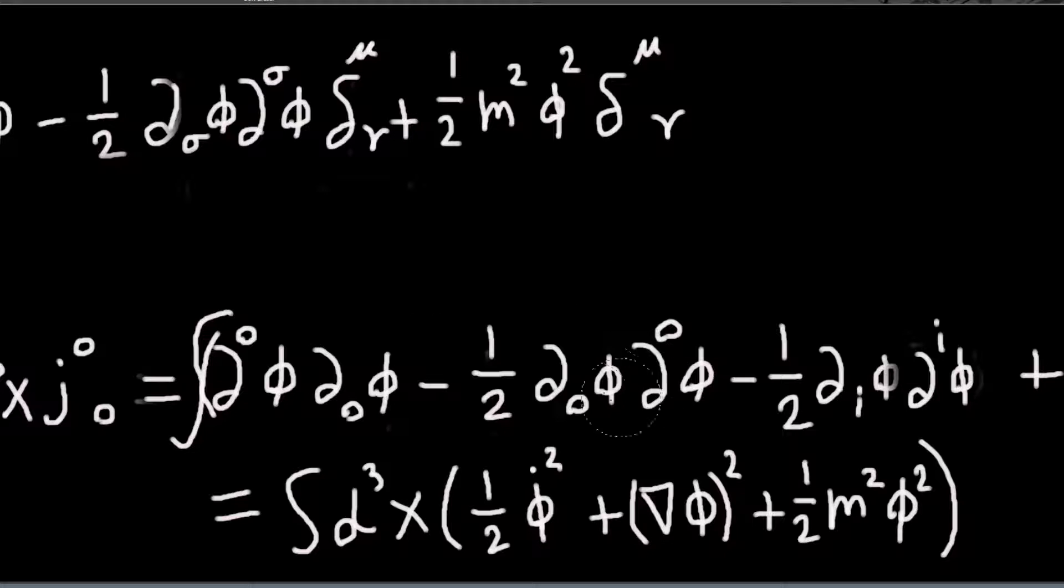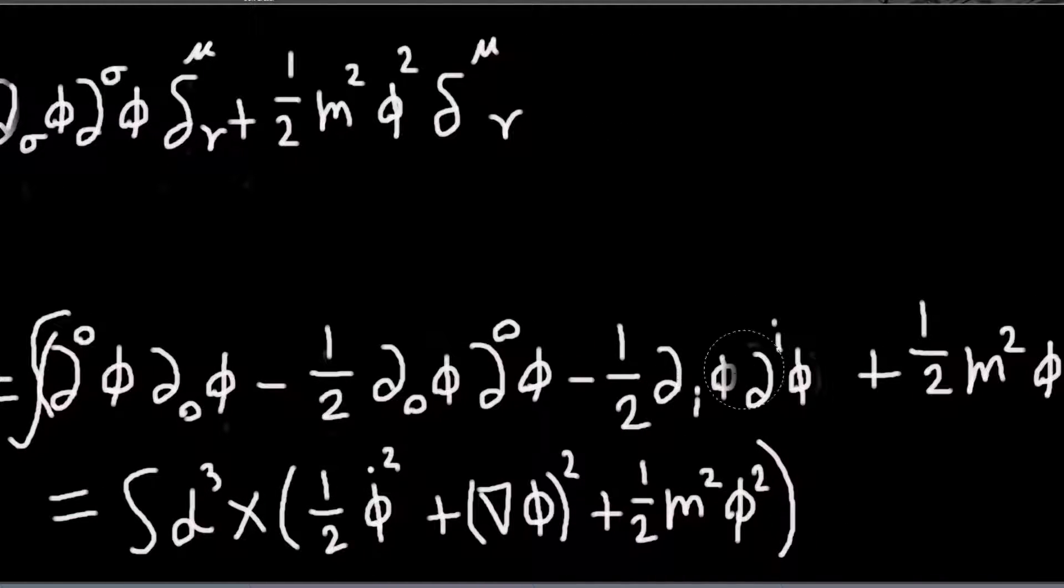And then, so this term and this term are the same. Only this is one half. So this minus one half. This is one half. And d zero is the time derivative. So I've written that there. And then this term is... So remember, di phi is like gradient phi.